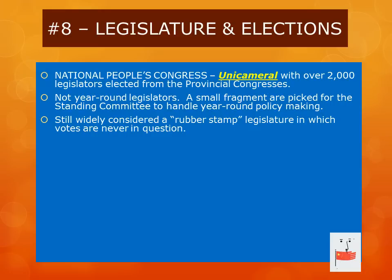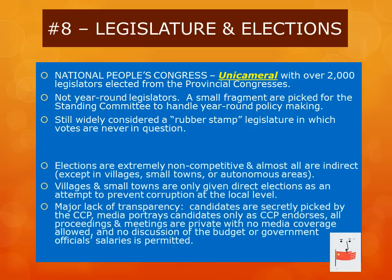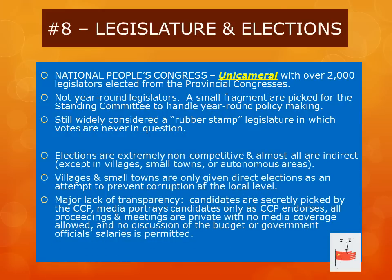Votes are never in question on almost any policy initiated within the state. Elections are extremely non-competitive, and almost all of them are indirect except for elections that occur in villages and small towns, which are given this discretion to try to avoid corruption more easily occurring at the local level. There is also a major lack of political transparency in China. Candidates are secretly picked by the CCP, the media portrays these candidates only as the CCP endorses, all proceedings and meetings of the NPC are private with no cameras allowed, and there is no discussion in Chinese media of the budget or the amount government workers make.